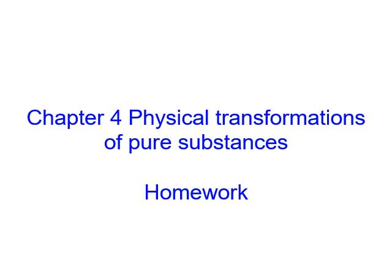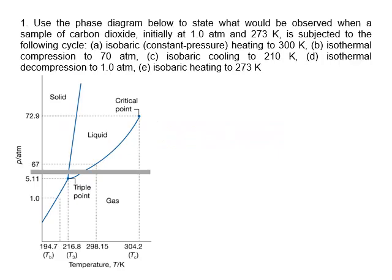Chapter 4 homework. Question number one is about how to read a phase diagram. In the phase diagram there's a triple point where three phases can exist at the same time, and there are three phase boundaries.